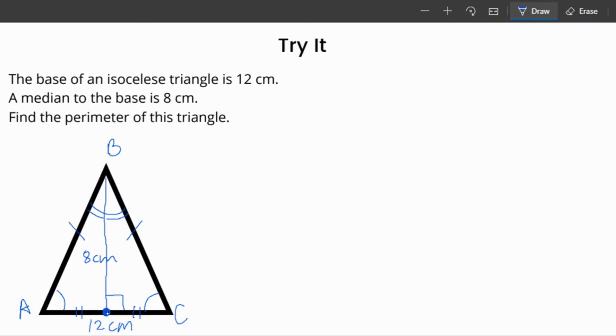Since this base is 12 centimeters and it's split in half by the median, then I know that, let's call this point M, so AM is equal to 12 over 2, which is 6 centimeters. So the length of this is 6 centimeters, as is the length of MC. Therefore MC is also 6 centimeters. Together it's 12.